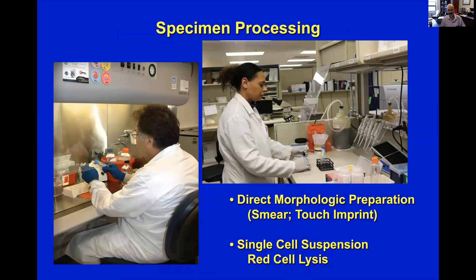The next step is specimen processing, and that is essentially two things. We like to make a direct morphologic preparation, either a smear or a touch imprint, so that we can look at it under a microscope to see what type of specimen it is and what might be the suspicion, particularly if you don't have that information. And then you make a single cell suspension so that those cells can be stained in individual tubes. For a blood or bone marrow specimen, you would do red cell lysis. For a lymph node or tissue specimen, you'll tease it out into a single cell suspension in media.